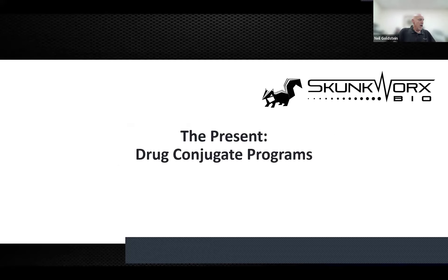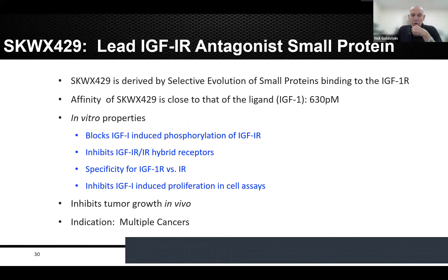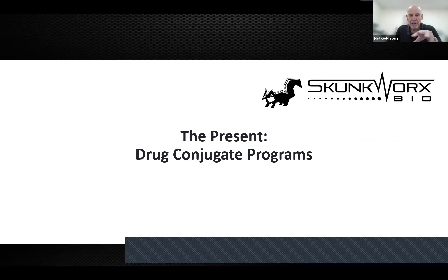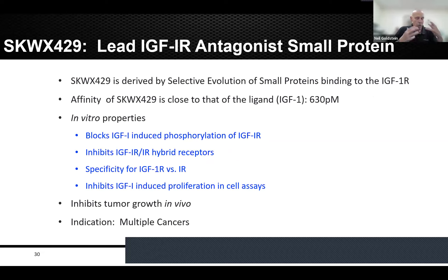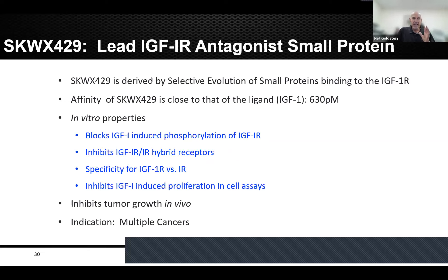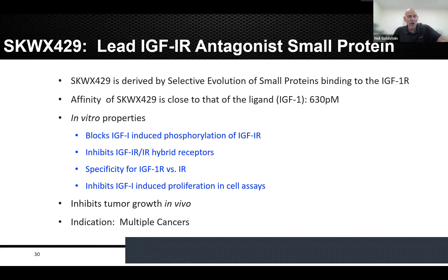Let me move to our present programs. A major program involves developing drug conjugates. Our lead program follows from the insulin receptor work — it followed that we might want to find something binding and antagonizing the IGF-1R receptor, since IGF-1R and the insulin receptor are related. We identified peptide 429, which had excellent affinity of 630 picomolar. It blocked many in vitro attributes of IGF-1R: we can block ligand binding, showed inhibition of phosphorylation and proliferation, and it was more specific for IGF-1R versus IR, while also inhibiting IGF-1R/IR hybrid receptors found in cancer cells. The indication is multiple cancers in which IGF-1R is overexpressed.